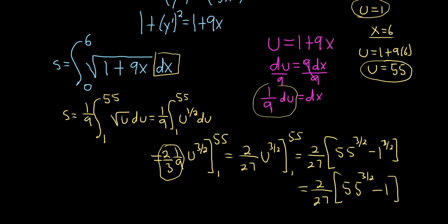let me do that, see what we get. So it's 2 over 27 times, and then 55 to the 3 halves, and then we subtract 1.